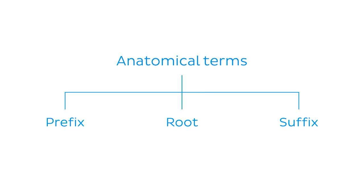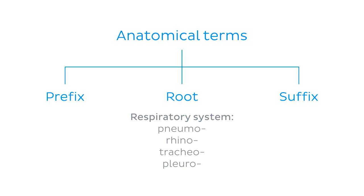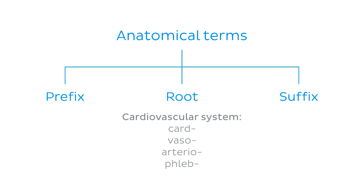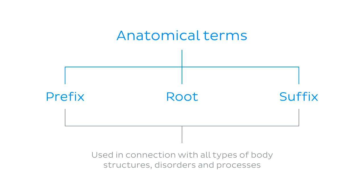As mentioned, the root of an anatomical term refers to its related body system. As we work through our series system by system, we will give particular focus to these types of word elements. Prefixes and suffixes, however, cross all system lines — they can generally be used in connection with all types of body structures, disorders, and processes, and these are what we'll be giving you an overview of today.